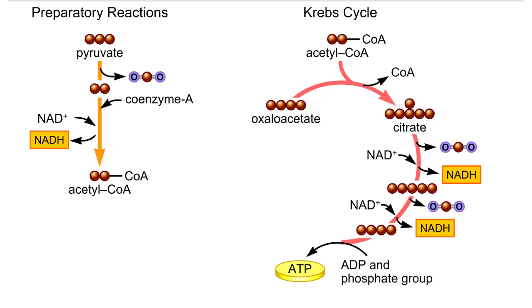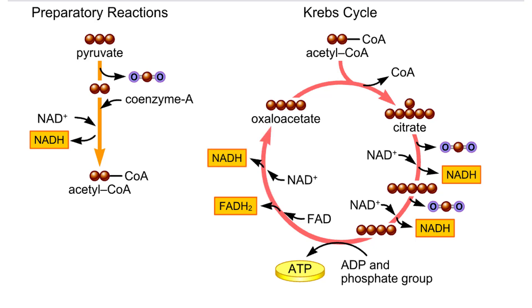One ATP forms by substrate level phosphorylation. FADH₂ forms when FAD picks up electrons and hydrogen. The final steps regenerate oxaloacetate and form one more NADH. For each molecule of pyruvate, the second stage reactions produce one ATP and reduce four NAD to NADH and one FAD to FADH₂.